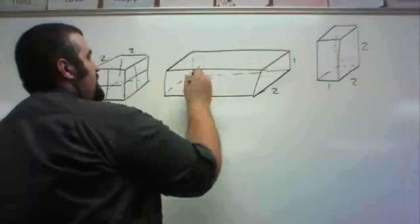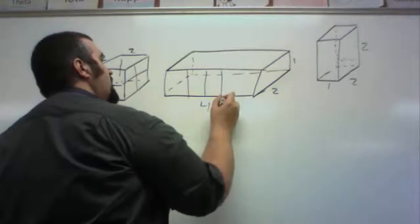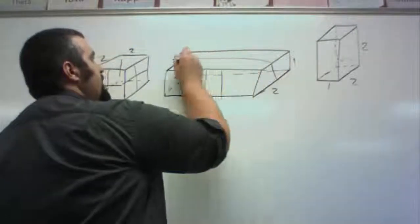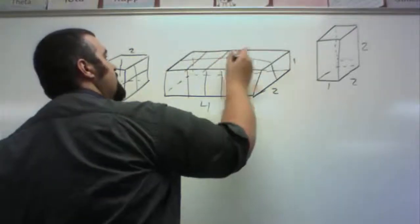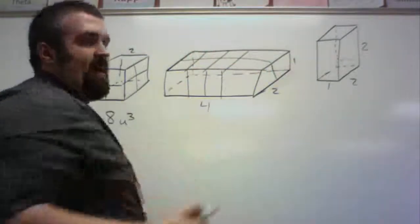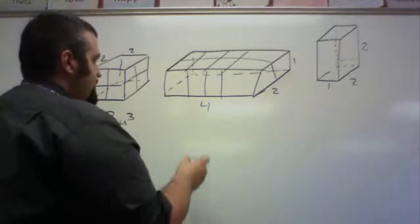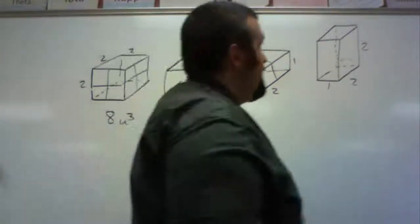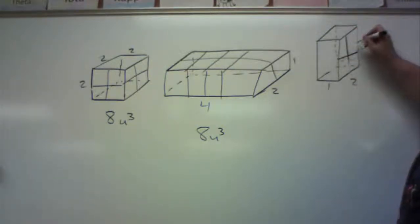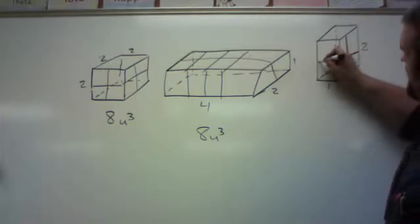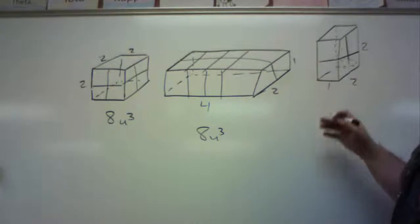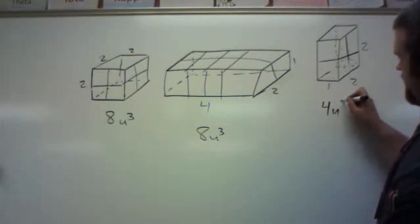Here, if I look, it's one tall, so I cut this into four lengthwise and two this way. Looking at the top view, I count eight, and there's only one layer vertically, so again I count eight units cubed. Here, if I look at a side view, it's two by two — that's four — and it's one deep, so I see four cubes, only one deep. So this is four units cubed.